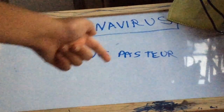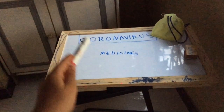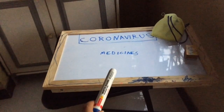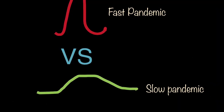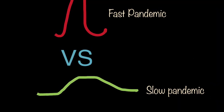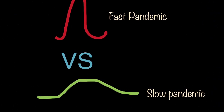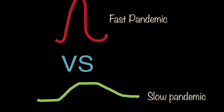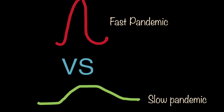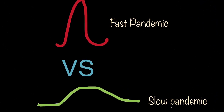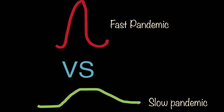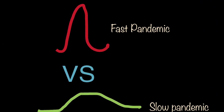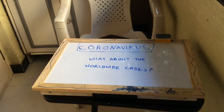There are medicines to treat the symptoms of the coronavirus. As you know, COVID-19 is a pandemic. If it's a fast pandemic it will end very badly; if it's a slow pandemic it will end okay. Scientists want to make it a slow pandemic, so stay at home.